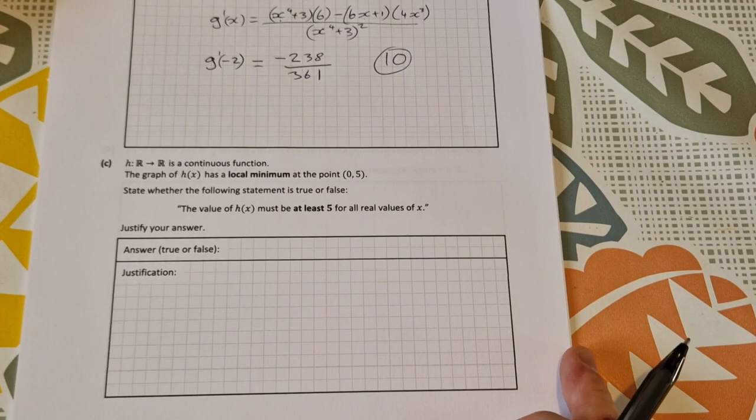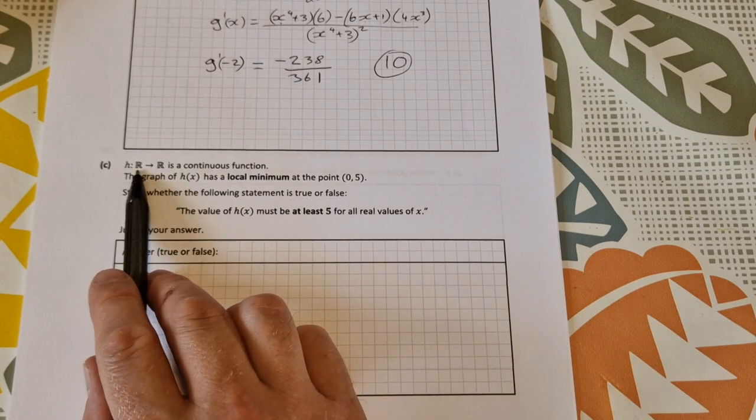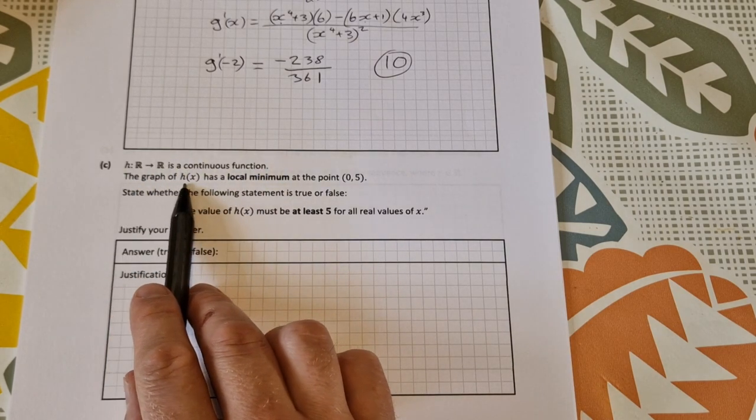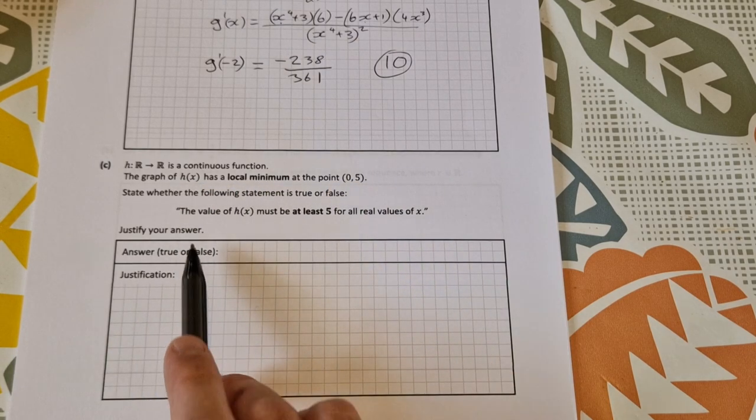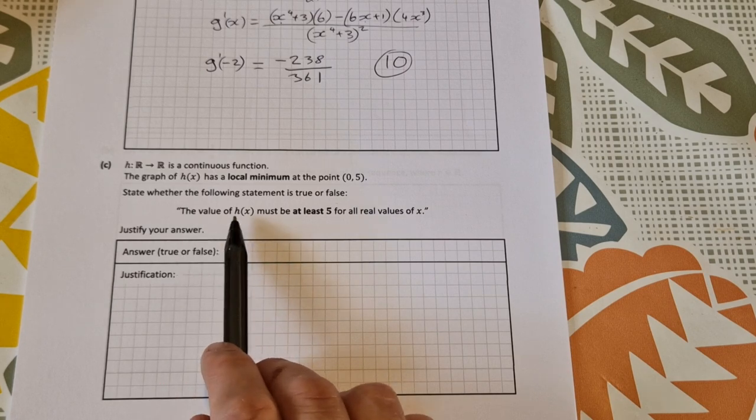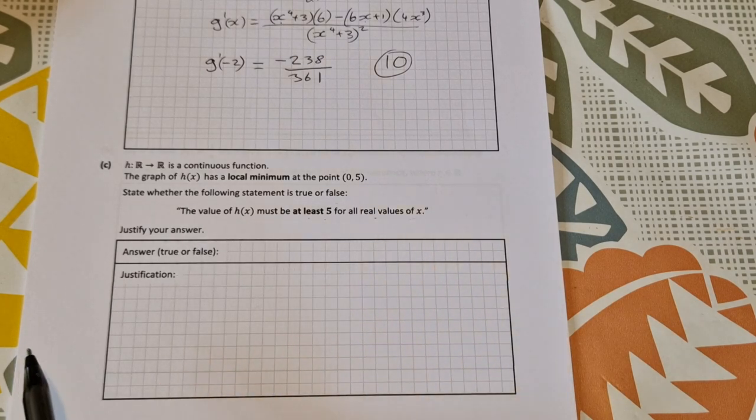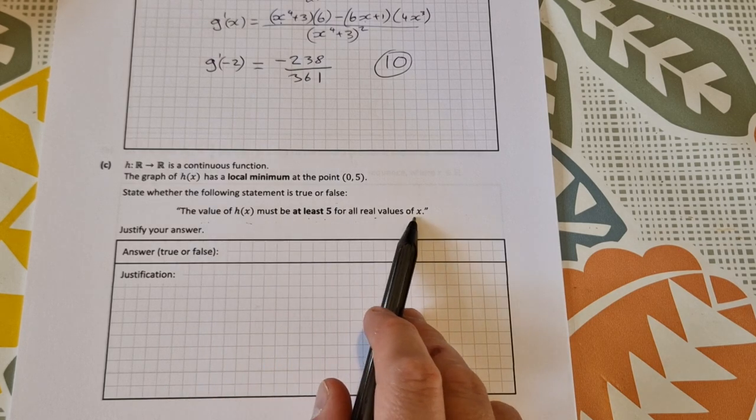Part (c): h from the reals to the reals is a continuous function. The graph of h(x) has a local minimum at the point (0,5). State whether the following statement is true or false: the value of h(x) must be at least 5 for all real values of x. It has a local minimum at (0,5), but it's a local minimum, so this is a false statement.